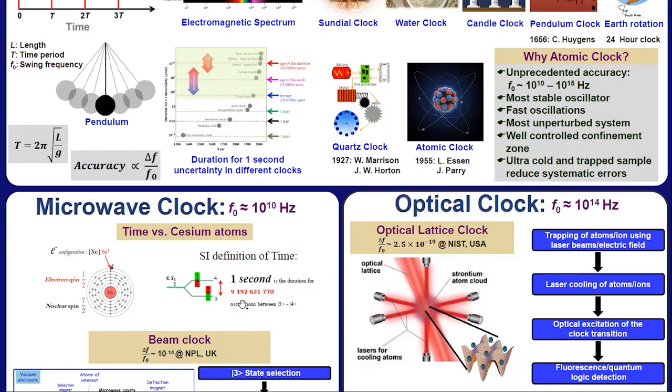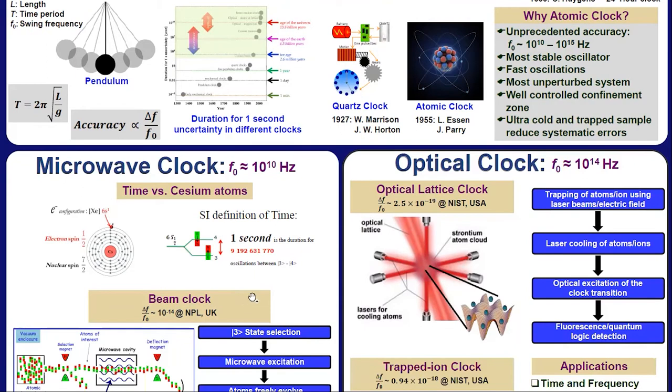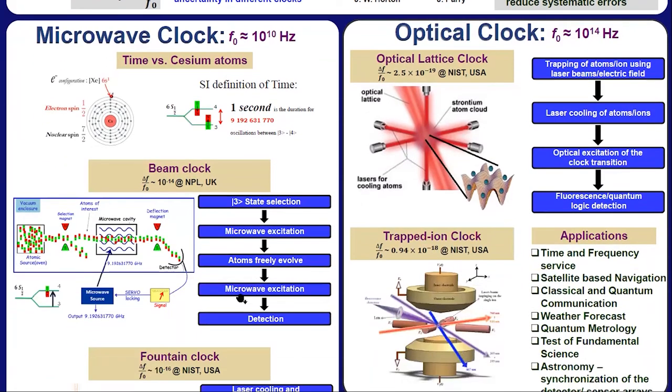So there are two different varieties of microwave clock. The first is beam clock and other is fountain clock. In beam clock, there is a reservoir of caesium atom. When it is heated up, it comes out of the region. With the state selection magnet, we select caesium atom with ground energy state, say state 3.